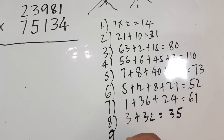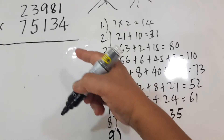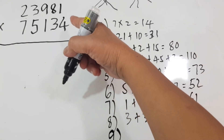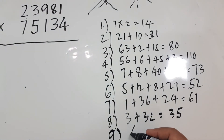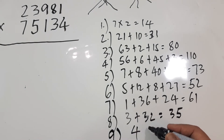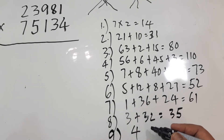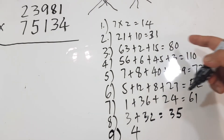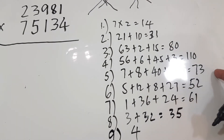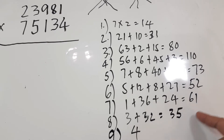Step 9, which is the last one: 1 times 4 is equal to 4. So now we have all our step results: 14, 31, 80, 110, 73, 52, 61, 35, and 4.